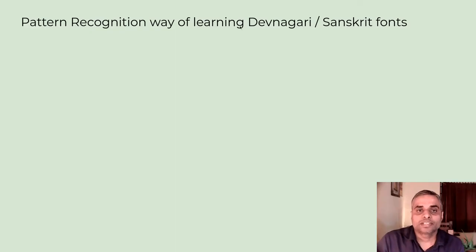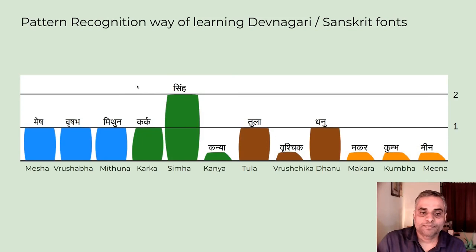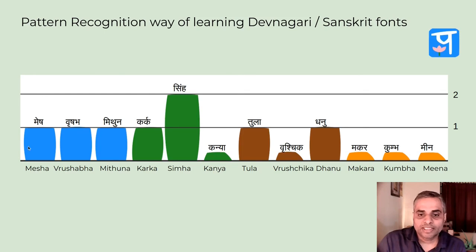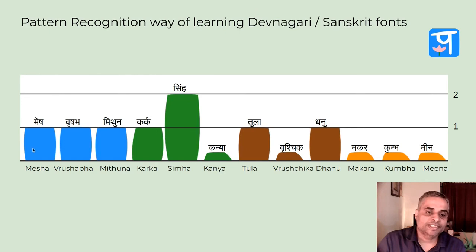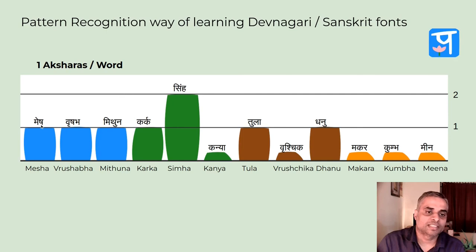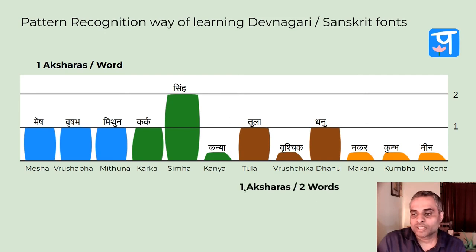Continuing the pattern recognition approach: the Parashar logo is also created using the Parashar coding language. Here there are about twelve words — the zodiac signs — and each of these twelve words initially requires learning one Akshara per word. For example, Mesha: 'Ma' was already learned, 'sha' needs to be additionally learned. Bha for Bha-related signs, and so on. As we progress, we find we need to learn only one Akshara for every two new words.